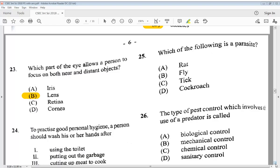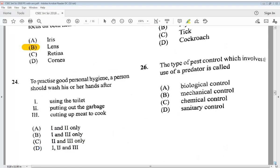24. To practice good personal hygiene, a person should wash his or her hands after 1, using the toilet. 2, putting out the garbage. 3, cutting out meat to cook. So we know that it is all of those three items. So D would be our answer. 1, 2, and 3.